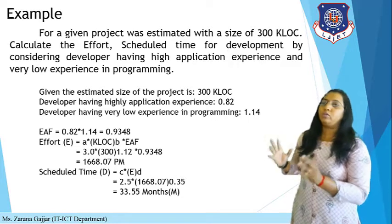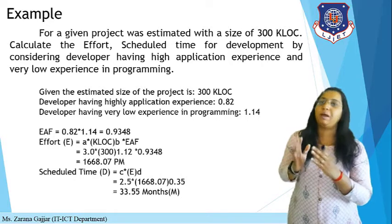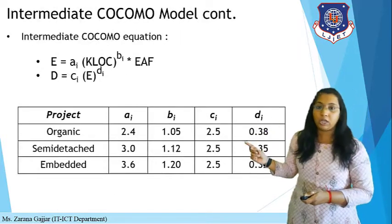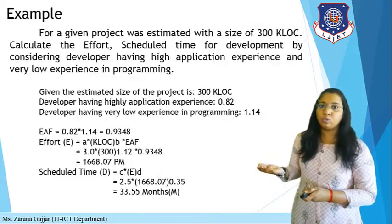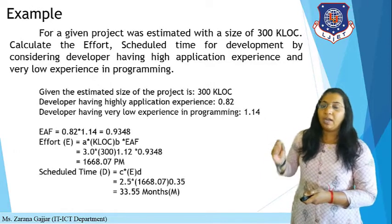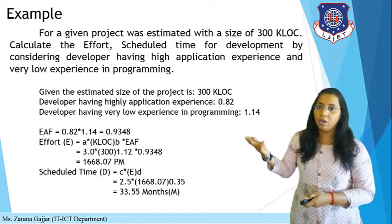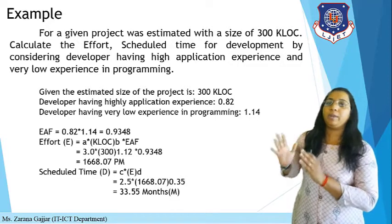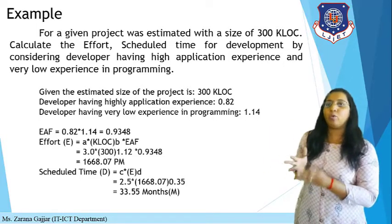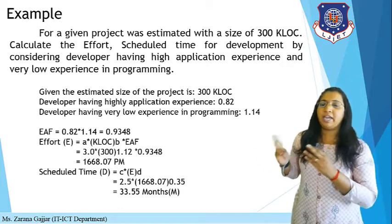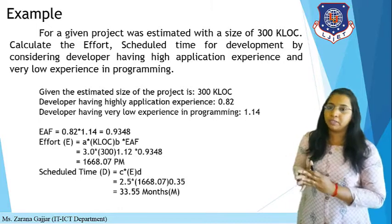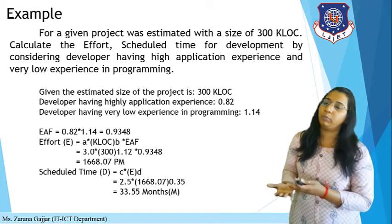Now put all values into the effort formula: E = A × (KLOC)^B × EAF. We selected semi-detached, so the constants are A = 3, B = 1.12, C = 2.5, and D = 0.35. KLOC is 300 and EAF is 0.93. Calculating this equation gives an approximate effort of 1,668.07 person-months (PM). For development time, using C and D constants with the calculated effort gives approximately 33.55 months — so approximately 34 months to complete the software product.